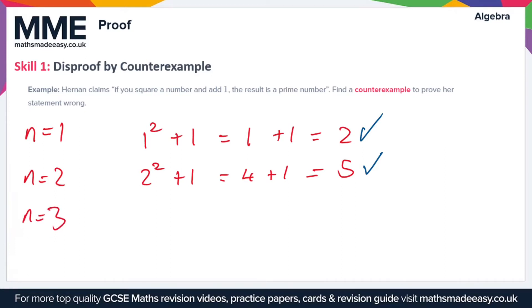So if n equals 3 this time we have 3 squared plus 1 that gives us 9 plus 1 which is equal to 10. Now what are the factors of 10? Well we have 1, 10 then we also have 2 and 5 so 10 is not a prime number. So therefore this is a counterexample to disprove her statement.